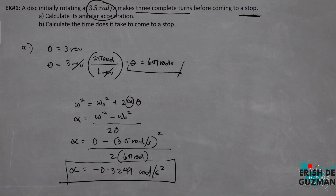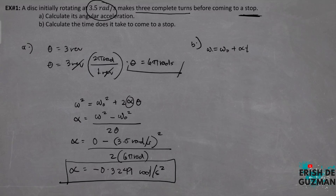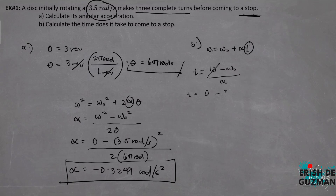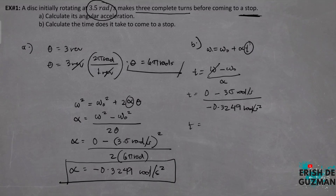For letter B, calculate the time it takes to come to a stop. Yung gagamitin natin is yung first equation: final angular velocity equals initial angular velocity plus angular acceleration times time. Solving for time: t equals final angular velocity minus initial angular velocity over the angular acceleration. Substituting: zero minus 3.5 radians per second over negative 0.3249 radians per second squared. The time is equal to 10.773 seconds.